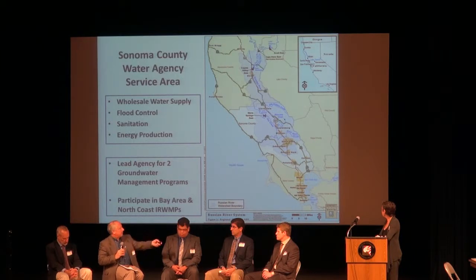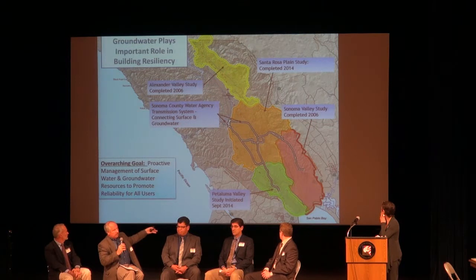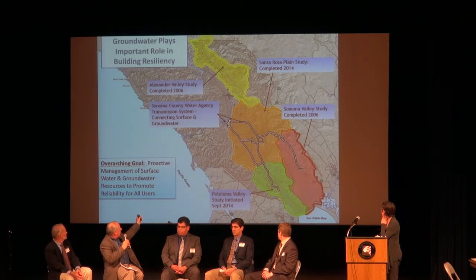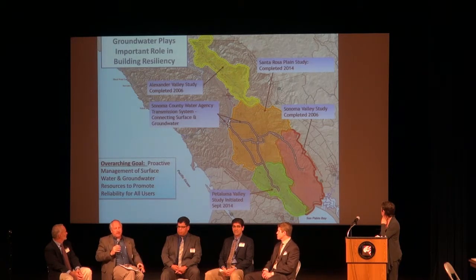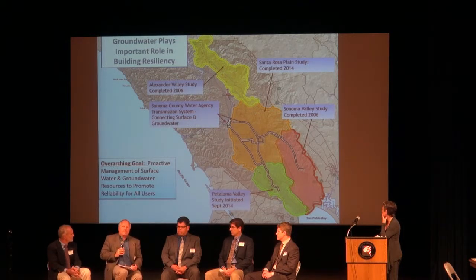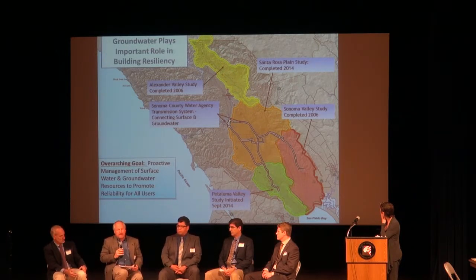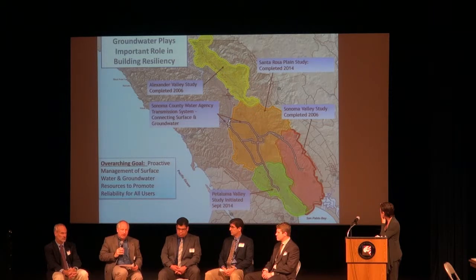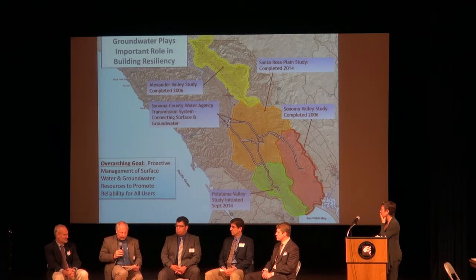We have been extensively involved with four of the basins in the area, and we have a pipeline system that takes our deliveries to the urban areas and several of these groundwater basins. Proactively managing those resources is something we have been and continue to be involved with. But we see many typical stressors of our groundwater system: areas of groundwater level declines, saline water intrusion — some of our basins are next to San Pablo Bay and San Francisco Bay — and depletion of surface water flows from groundwater pumping.